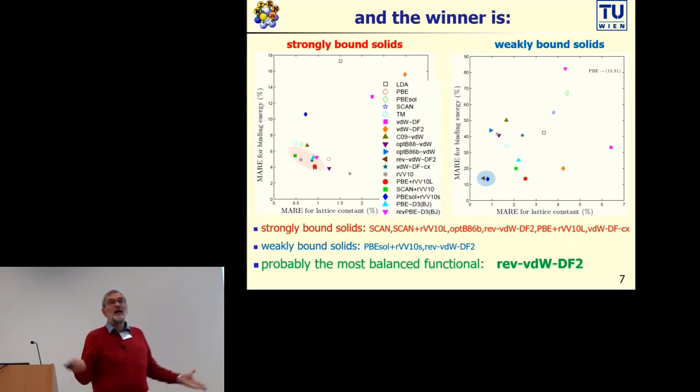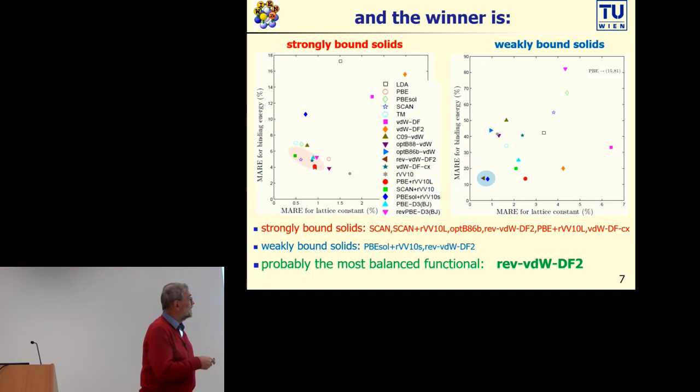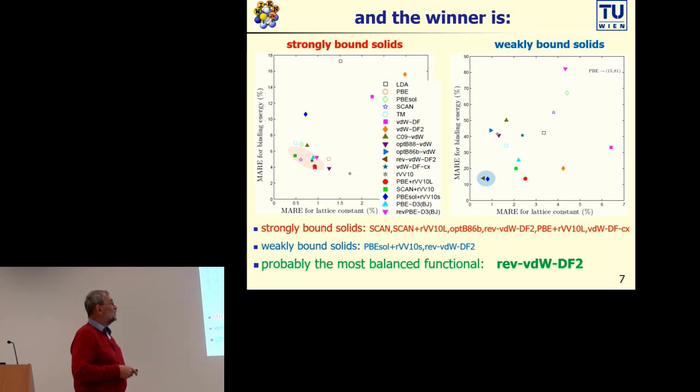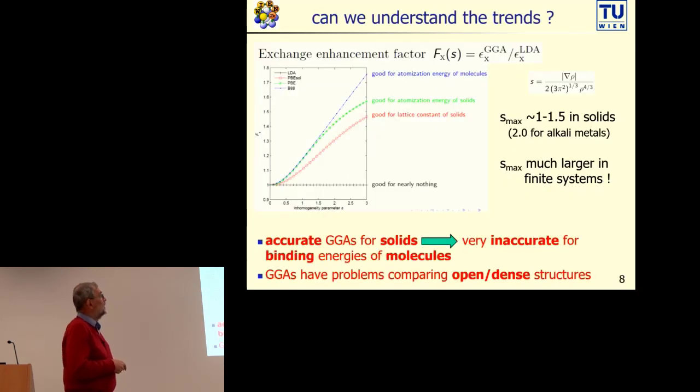But we have a whole variety of different functionals which perform quite reasonably well for such properties. If we now combine this and search who is the winner, then we see that for strongly bound solids we have a couple of functionals all lying in this range which give you decent energies and lattice parameters, both of meta-GGA and Van der Waals non-local Van der Waals type. But for the weakly bound solids, only two functionals stand up, and this is PBEsol with rVV10 or rVV Van der Waals DF2, which are clearly the best functionals in this series. The most balanced functional of all those tests is probably this rVV Van der Waals DF2 functional.